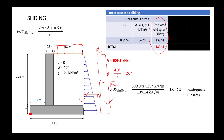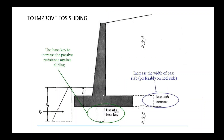Once you have all the information, you can calculate the FOS for sliding. If the condition is inadequate or unsafe, you can either increase the base width of the retaining wall or use a base key. By using a base key, you increase the passive resistance by calculating the passive pressure down to the depth of the base key.